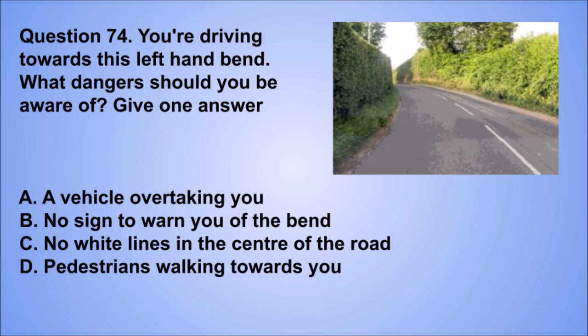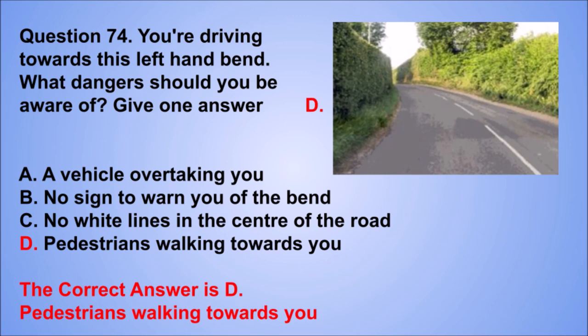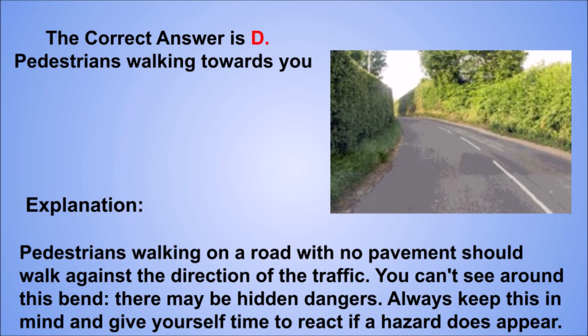Question 74. You're driving towards this left-hand bend. What dangers should you be aware of? Give one answer. A. A vehicle overtaking you. B. No sign to warn you of the bend. C. No white lines in the center of the road. D. Pedestrians walking towards you. The correct answer is D, pedestrians walking towards you. Pedestrians walking on a road with no pavement should walk against the direction of the traffic. You can't see around this bend, there may be hidden dangers. Always keep this in mind and give yourself time to react if a hazard does appear.